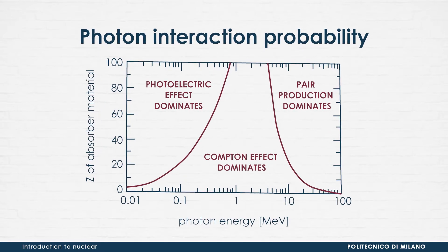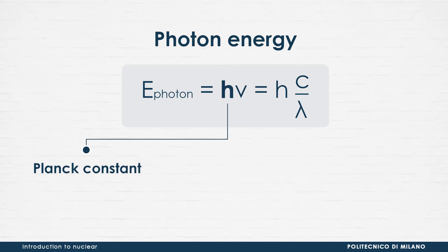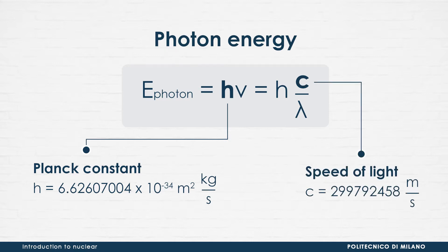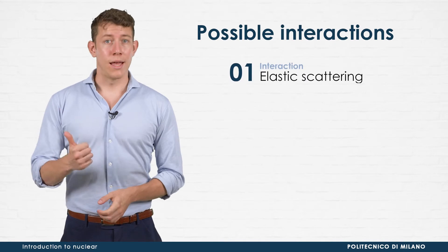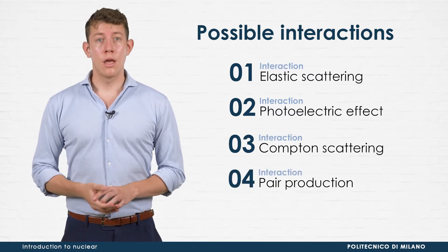Let's start from the beginning. For gamma interaction with matter, the probability of a reaction to occur is related to two factors: the atomic number of the material and the energy of the impinging photon. The latter can be expressed as the product between the Planck constant h, which is approximately 6.62 times 10 to the minus 34 meters squared times kilograms over second, and either the photon frequency or the ratio between the speed of light c, that is about 300 million meters per second, and the photon wavelength lambda. The possible interactions are elastic scattering, photoelectric effect, Compton scattering, pair production, and photofission.